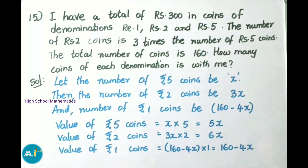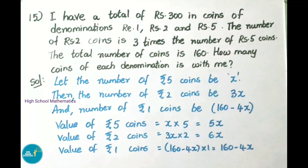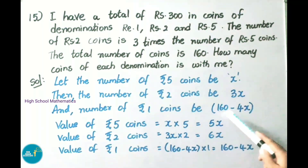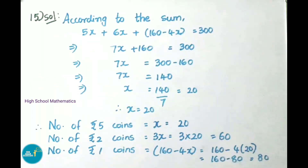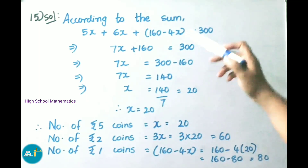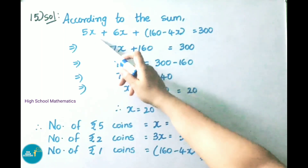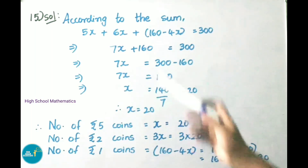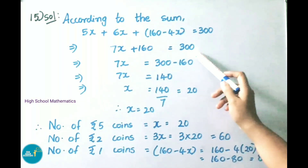Value of 5 rupee coins is x times 5, that is 5x. Value of 2 rupee coins is 3x times 2, that is 6x. Value of 1 rupee coins is (160 minus 4x) times 1, that is 160 minus 4x. According to the sum: 5x plus 6x plus (160 minus 4x) equals 300. That gives 11x minus 4x plus 160 equals 300, so 7x plus 160 equals 300.